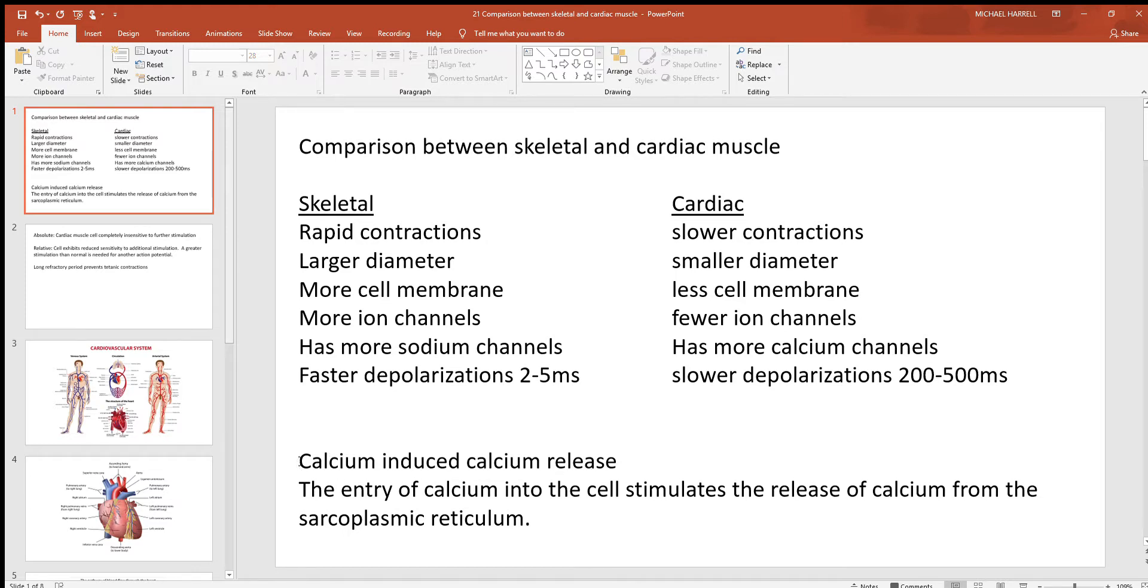So what happens with calcium induced calcium release is this: When something like norepinephrine lets calcium channels open on cardiac cells, the calcium comes in. When the calcium comes in and the charges swap and you generate an action potential, that will let calcium out of this organelle. Basically what happens, you get a very large amount of calcium released inside these cardiac cells when they depolarize and contract.